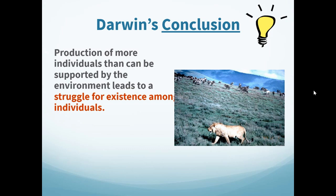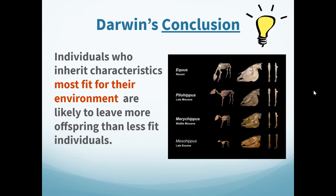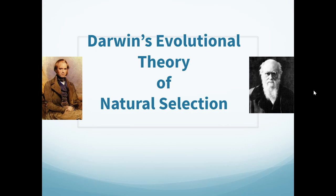Darwin's conclusions were that production of more individuals than the environment can support leads to a struggle for existence — competition over shared resources. Only a fraction of offspring will survive each generation, which brings us to survival of the fittest. Fit doesn't necessarily mean the biggest, strongest, or fastest; it means the organism best adapted for its environment. Individuals who inherit those fit characteristics are more likely to leave offspring than less fit individuals, thus creating the evolutionary theory known as natural selection.